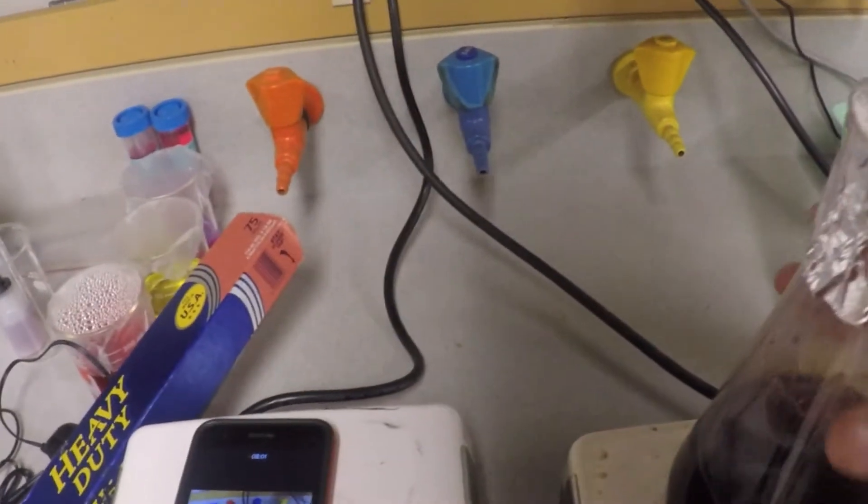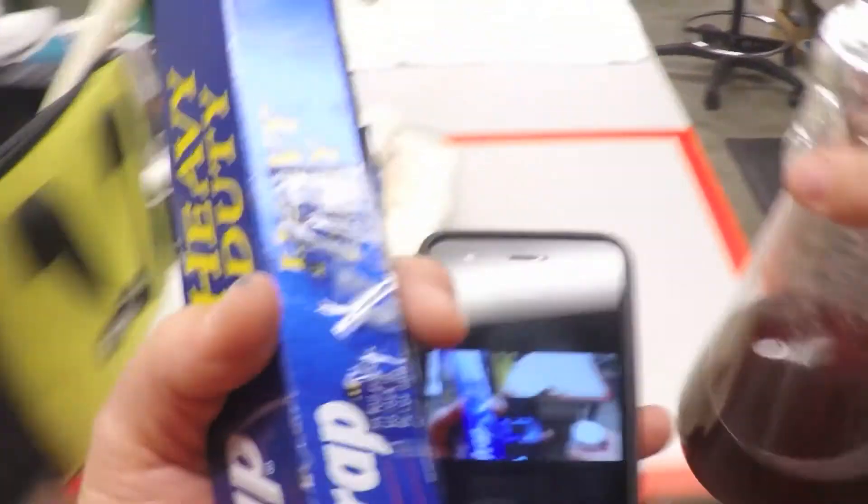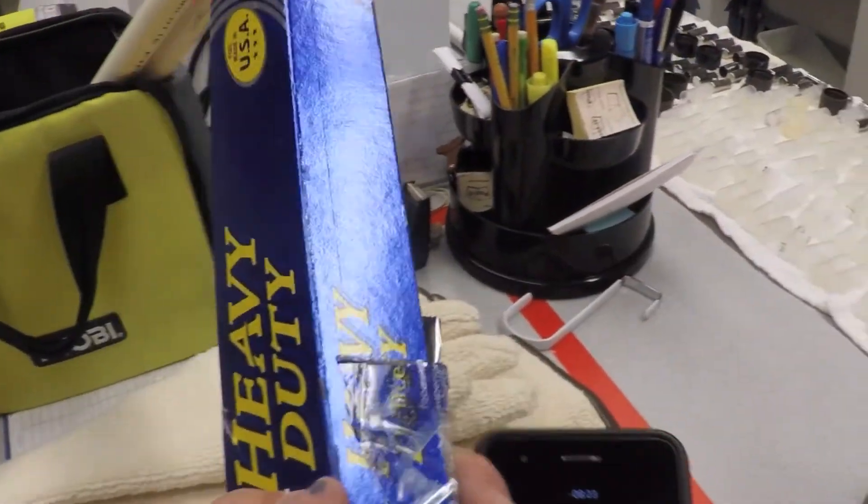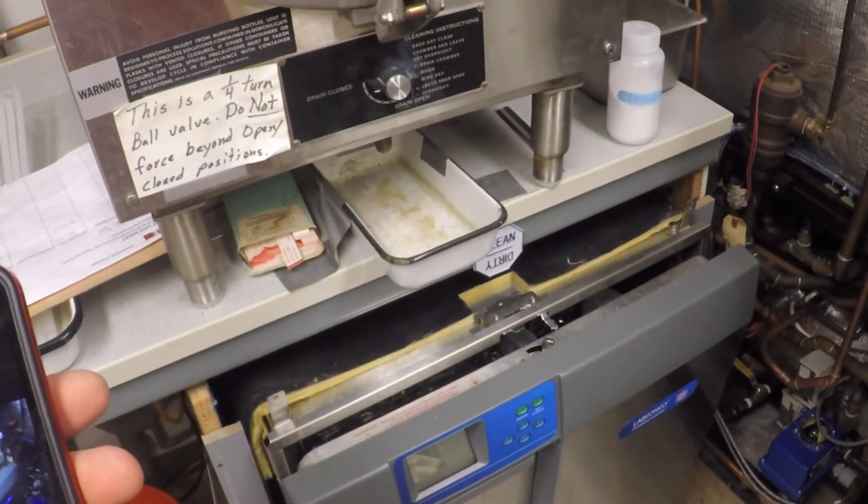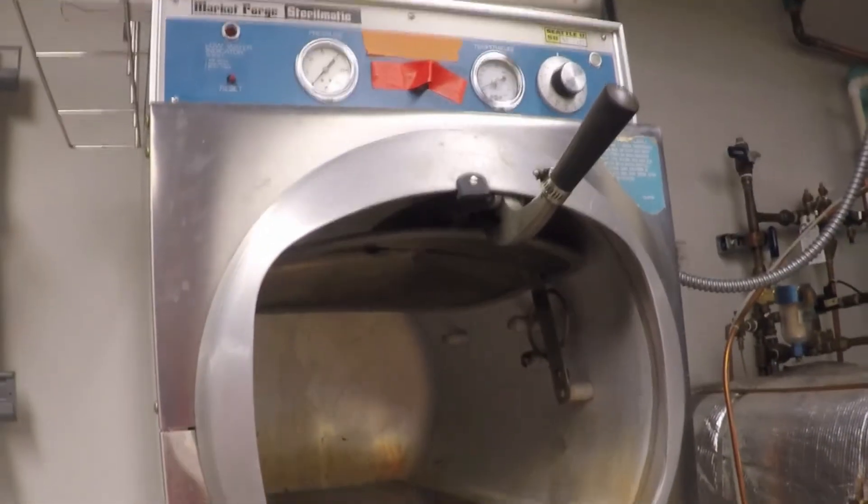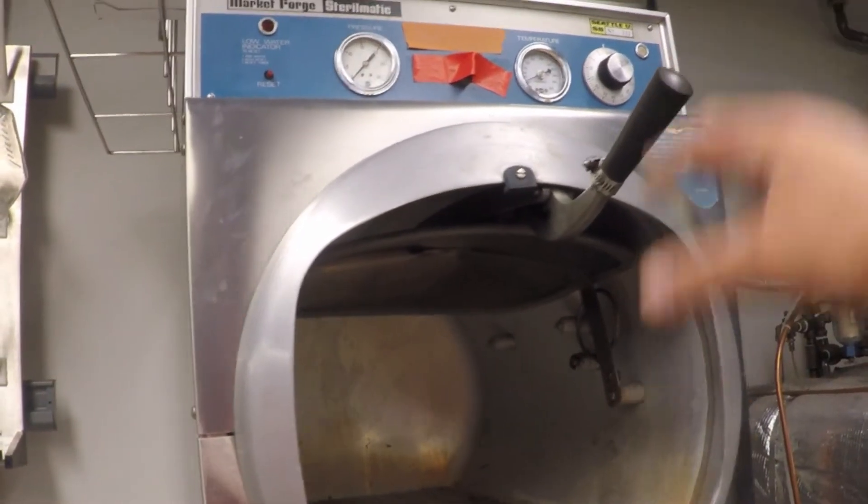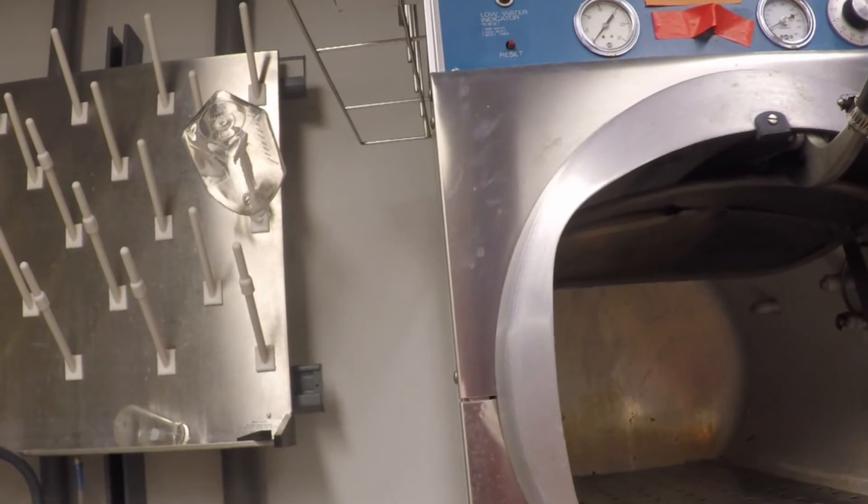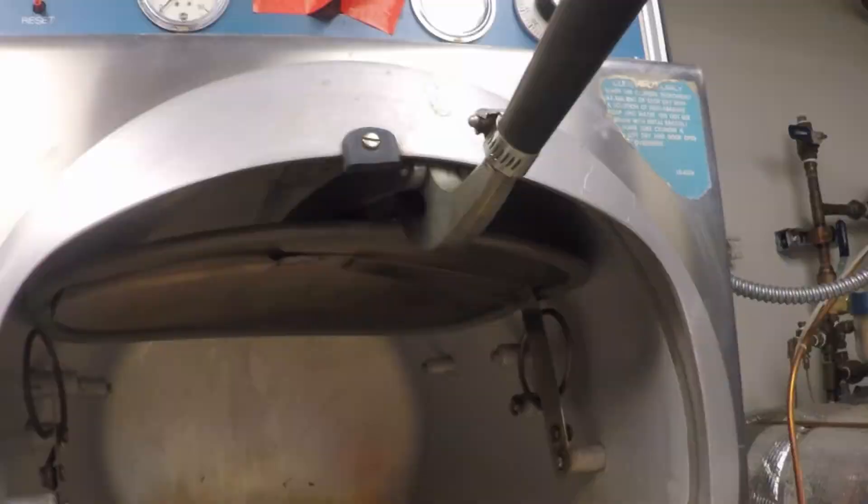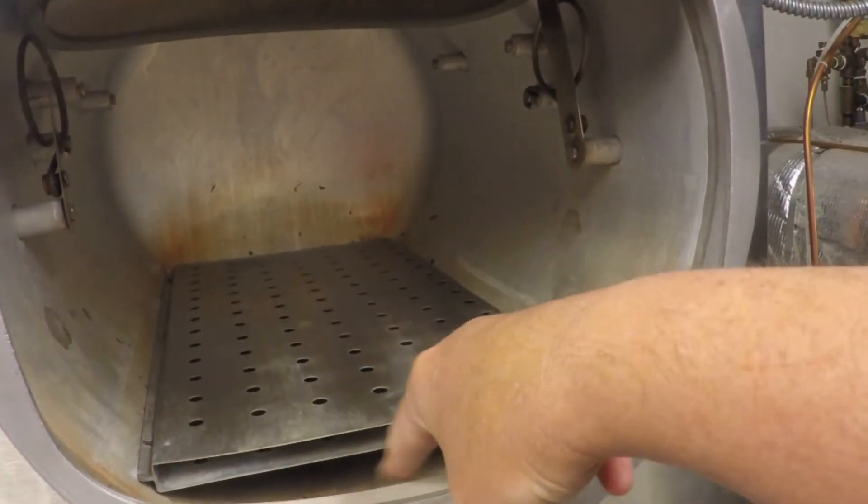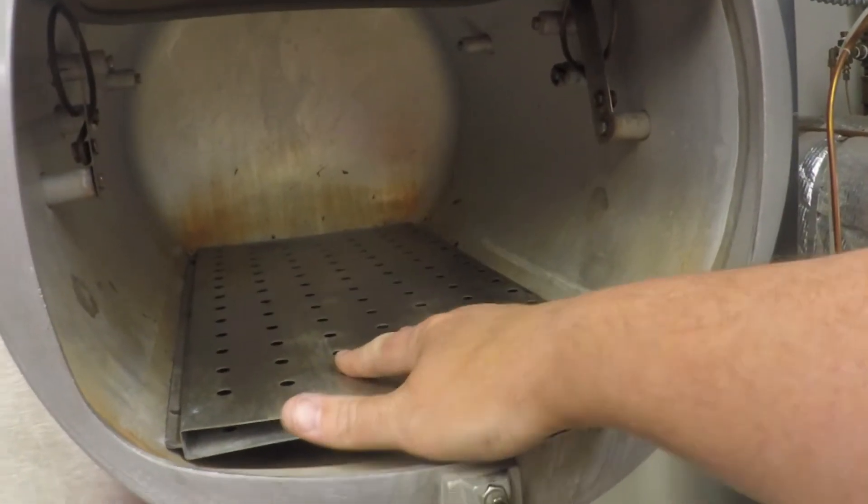Autoclaves—what are they? They are basically big pressure cookers. That's really all they are. We've got a couple different flavors. We've got a little one that I usually use often, which is kind of like what you'd find in a dental office. See that? That is an autoclave. It's a chamber. You fill this with water up to a certain level.